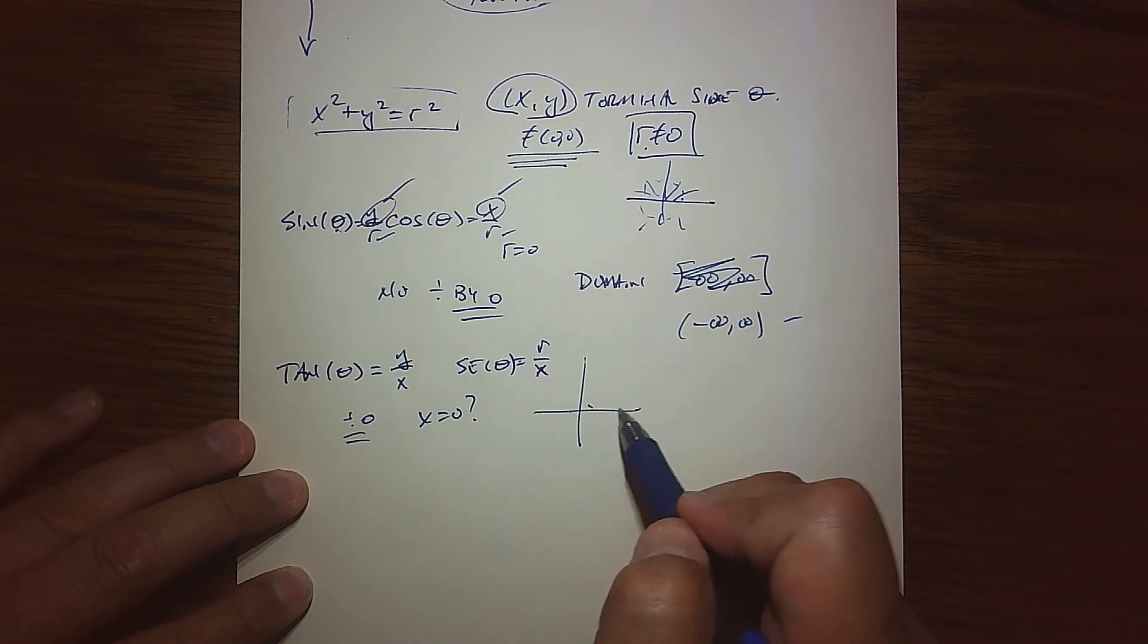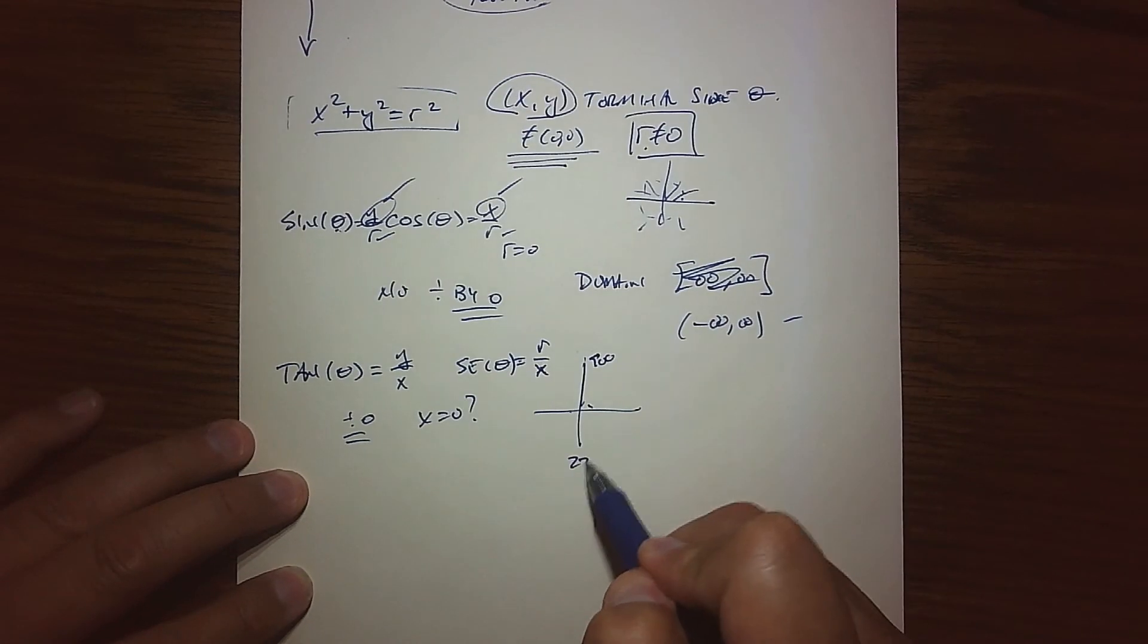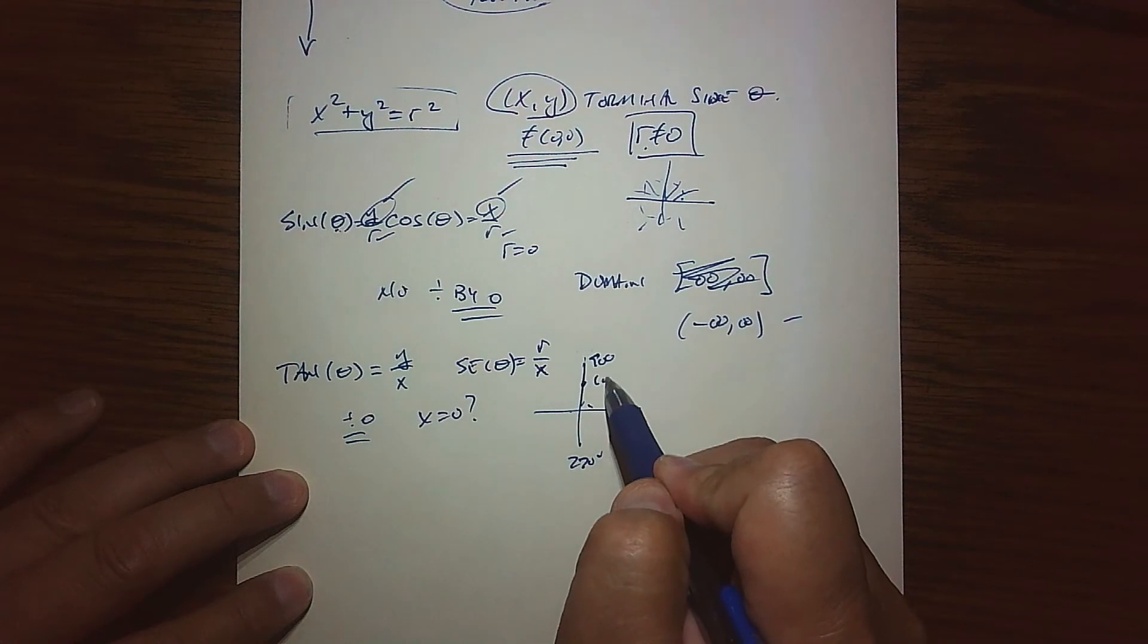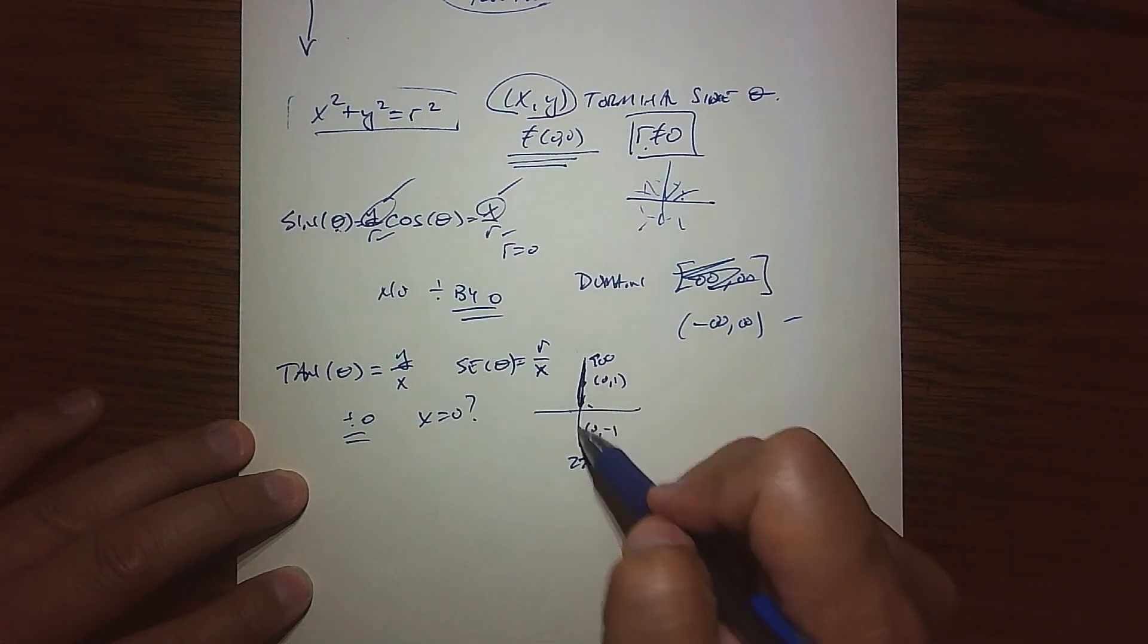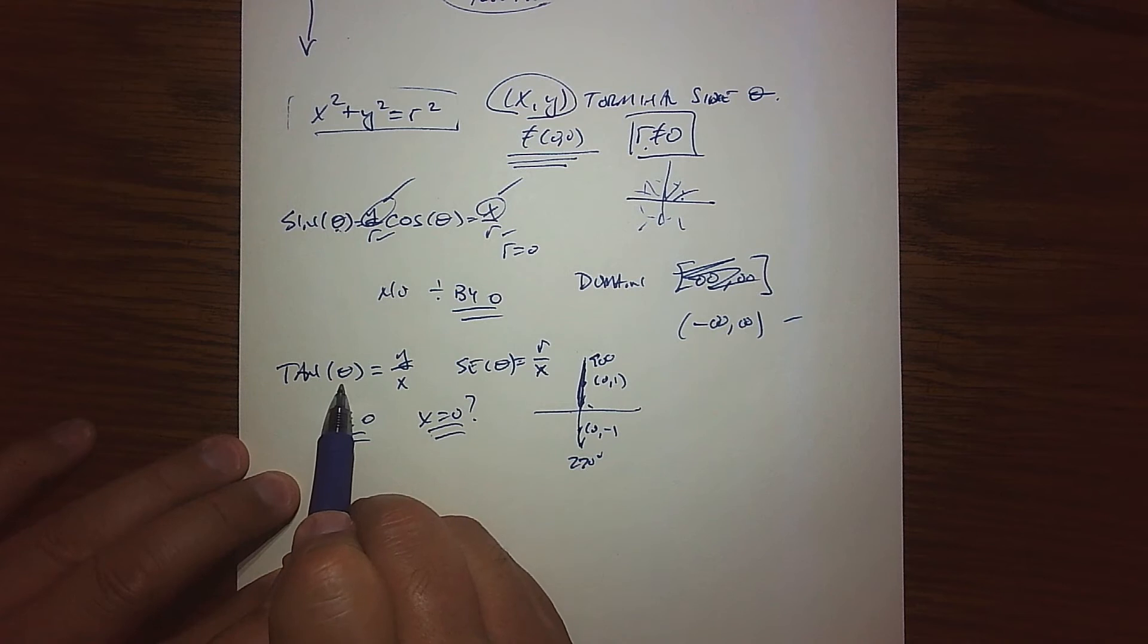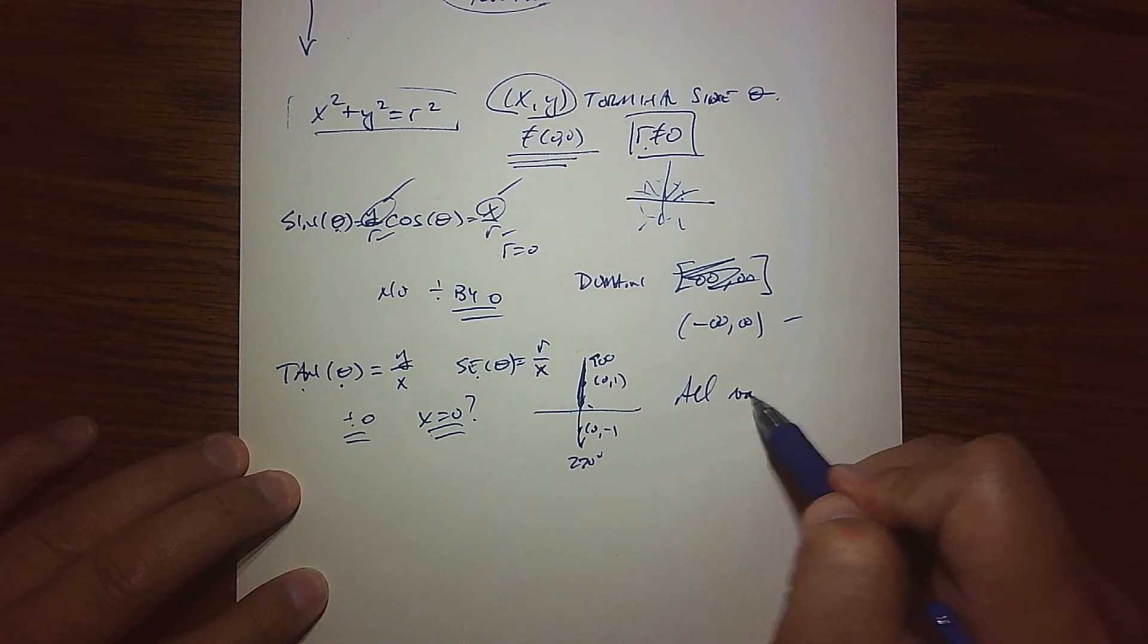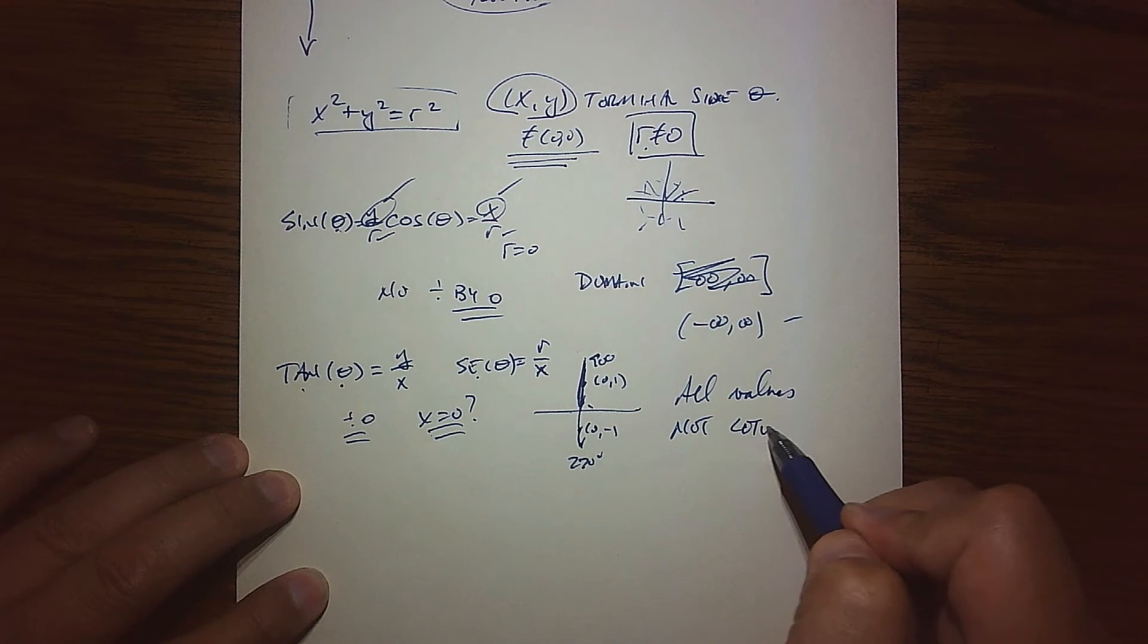When we look at our little thing here, X is equal to zero at 90 degrees and at 270 degrees. That would be like (0,1) and (0,-1), so anywhere along the y-axis. Basically, X is equal to zero. That basically means our angles theta for secant and tangent, they can pretty much be any angle.